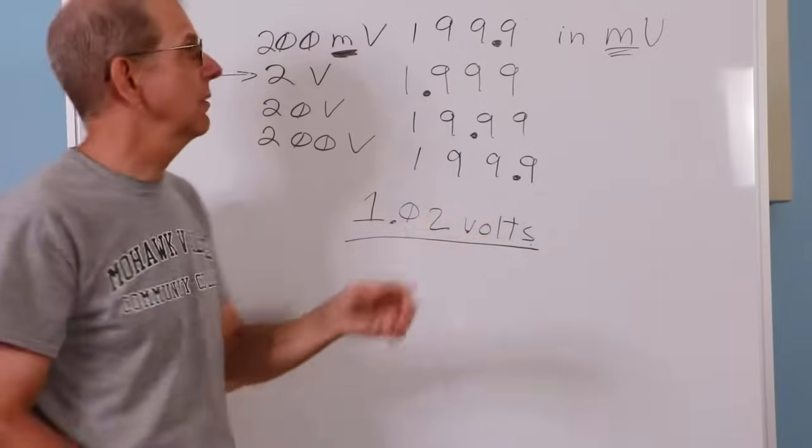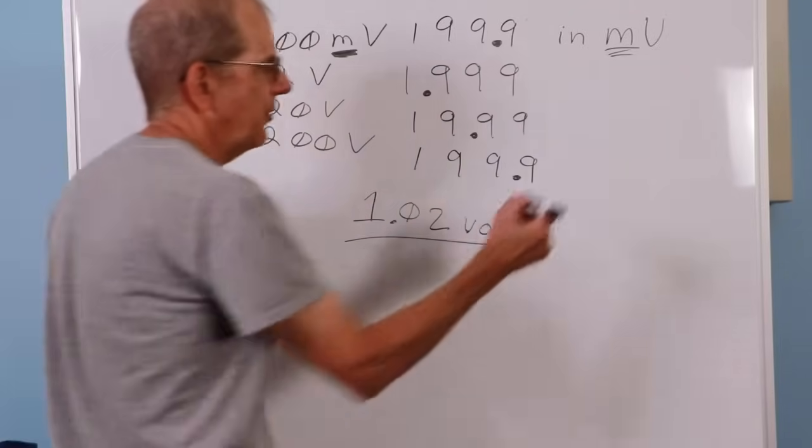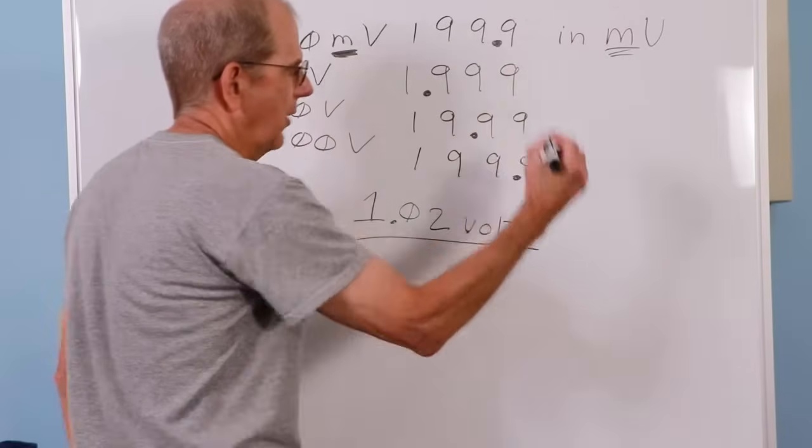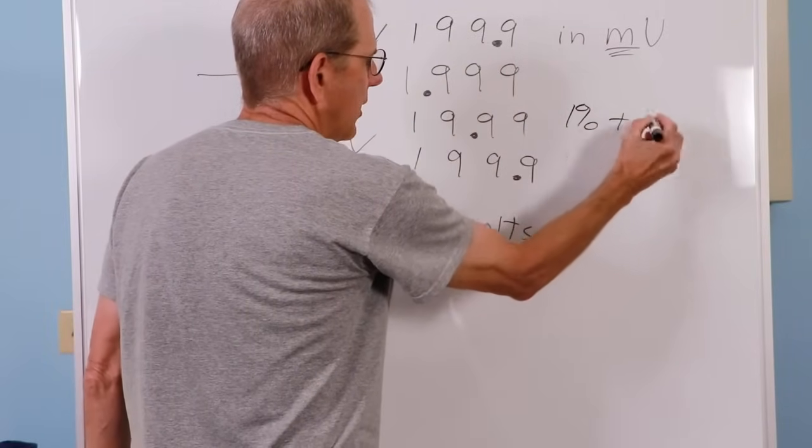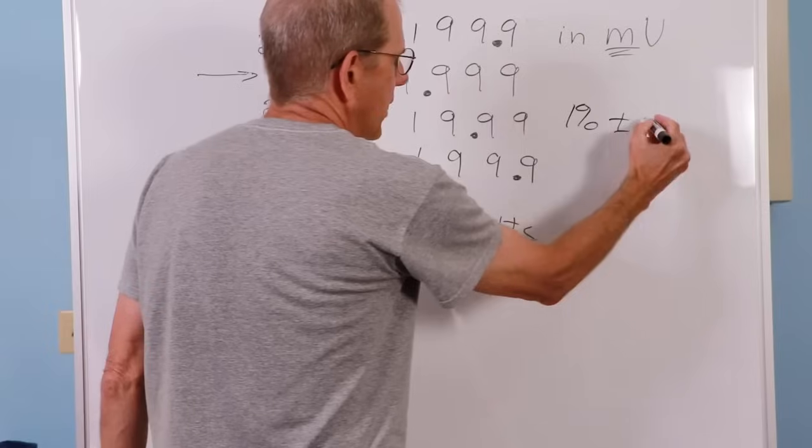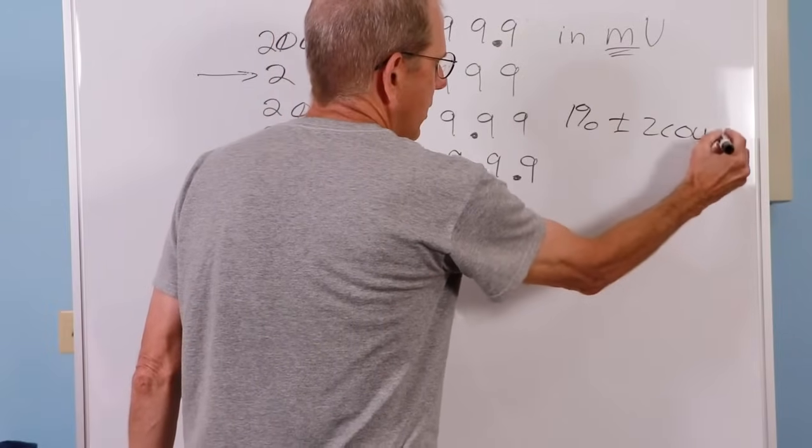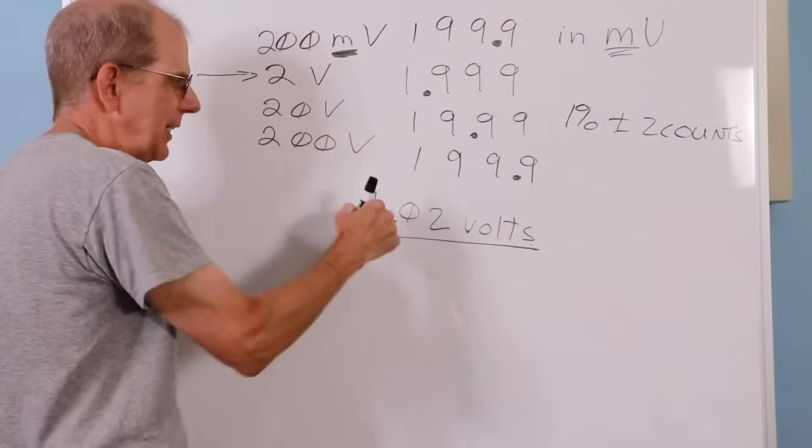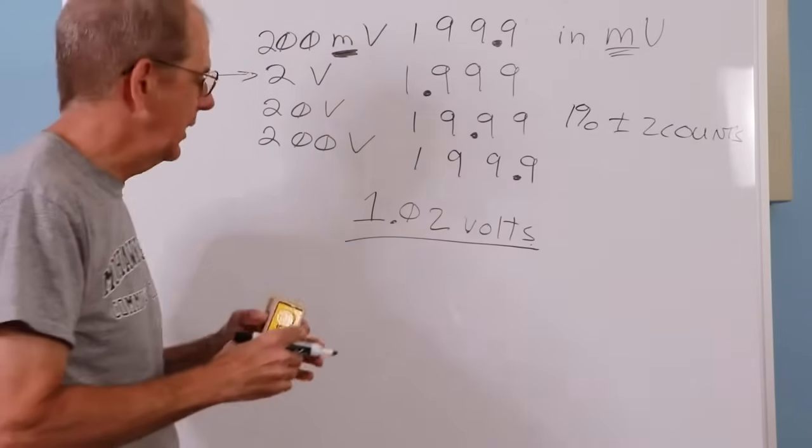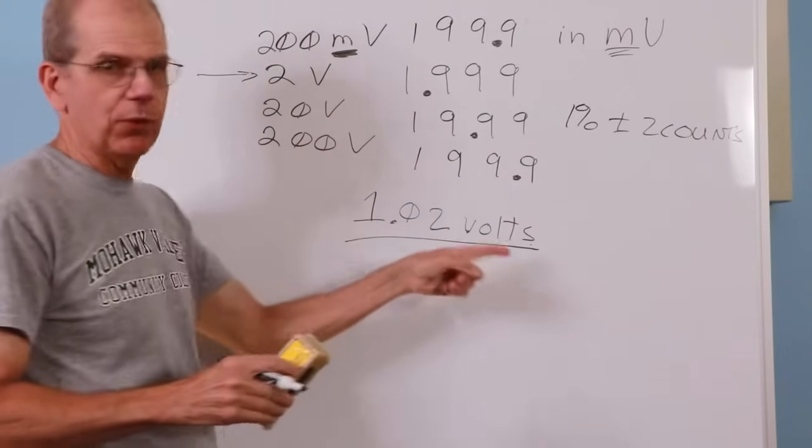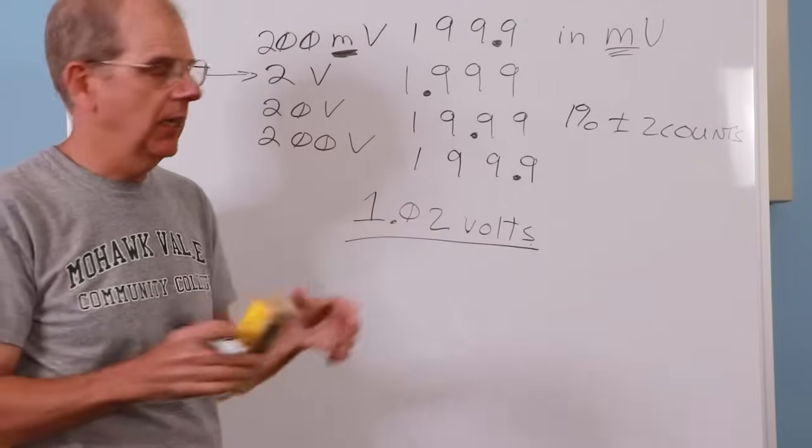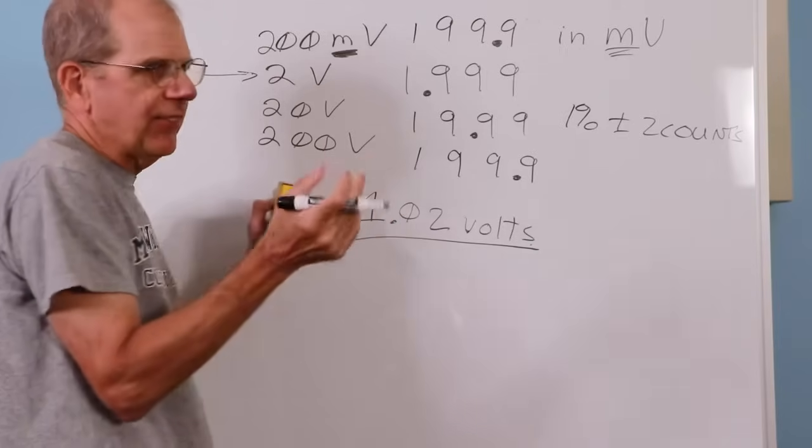Now, what's the accuracy? So if the accuracy on this thing, just to throw one out here, let's just say it's, you know, plus or minus 1 percent, plus or minus two counts. So your meter actually reads, if it was perfect, let's just say it reads, you know, the exact potential, which is 1.02 volts.